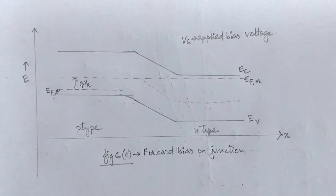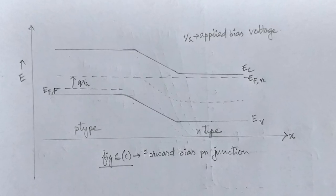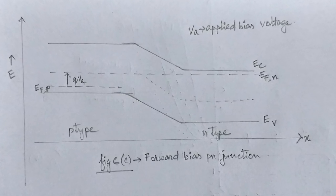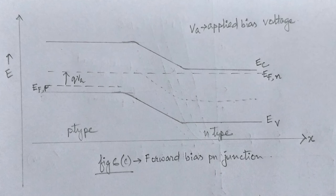Basically, as we increase the temperature, the intrinsic carrier concentration increases. This pushes the Fermi level more closer to the middle of the band gap.